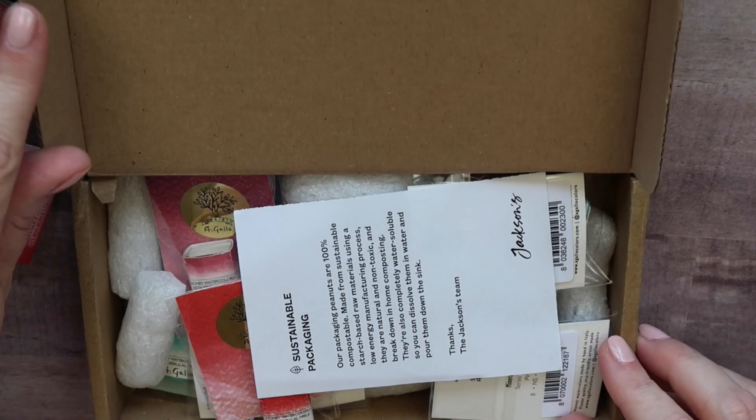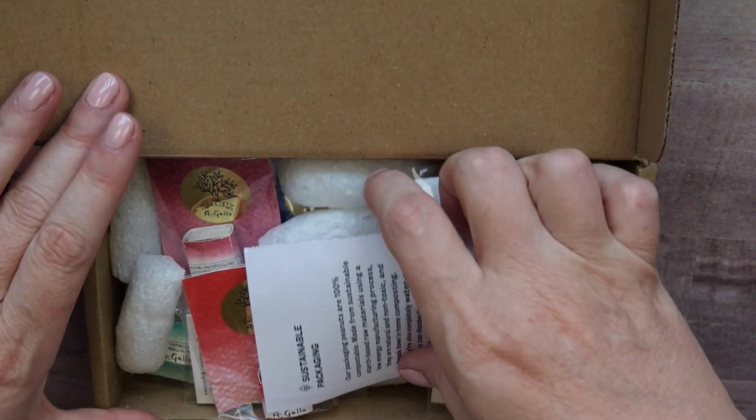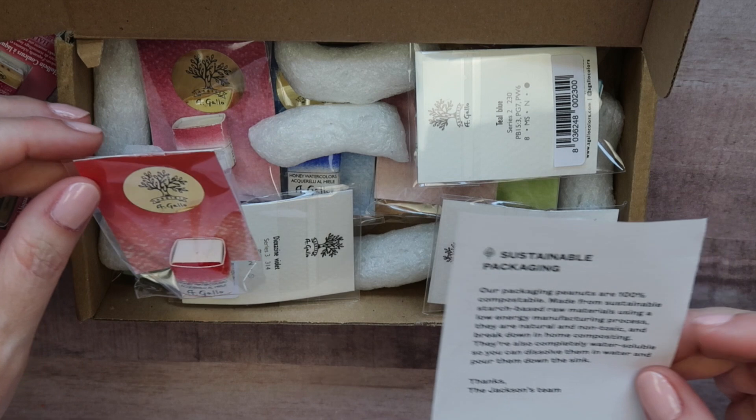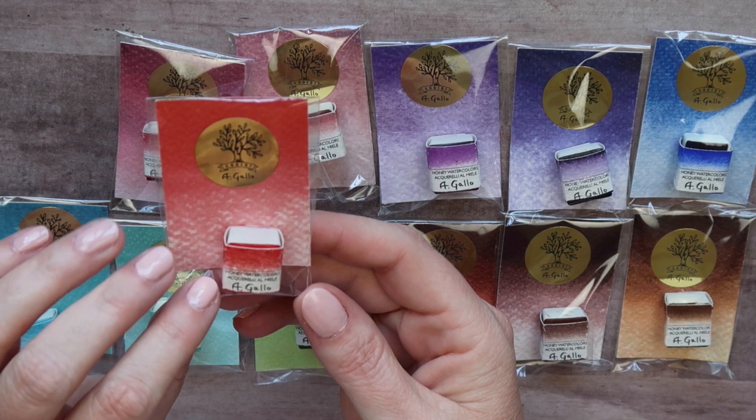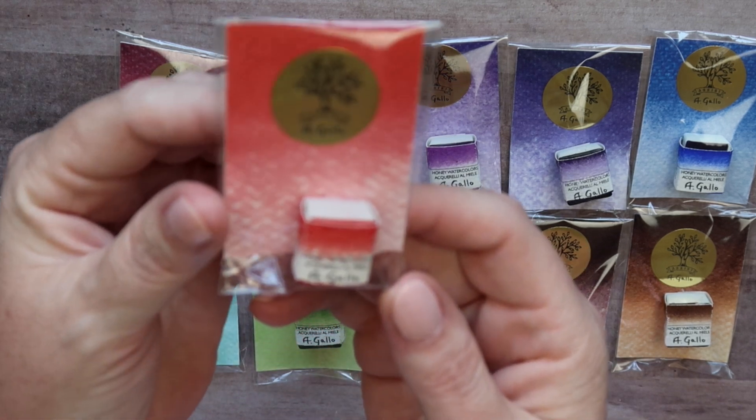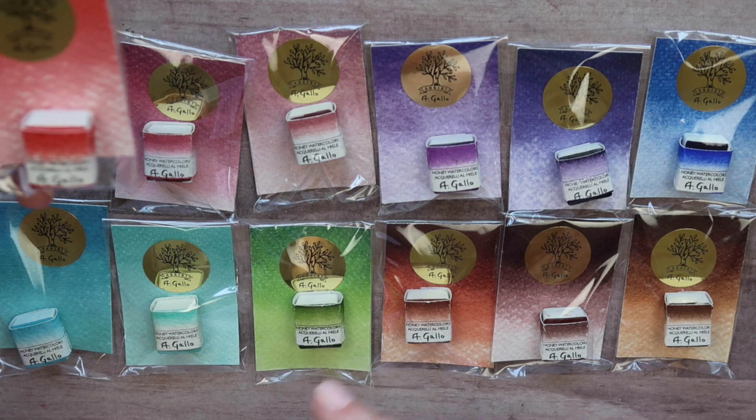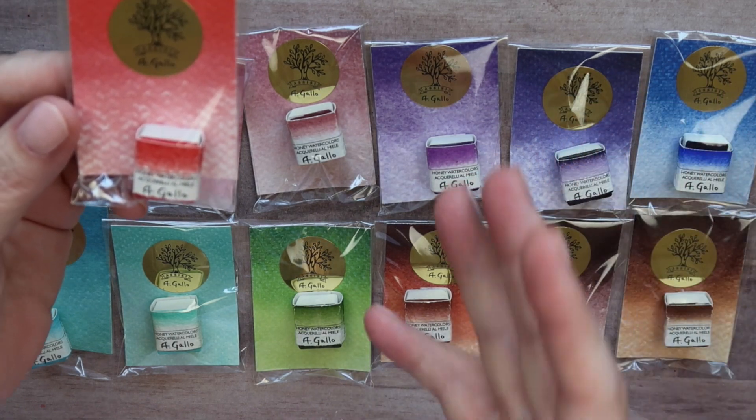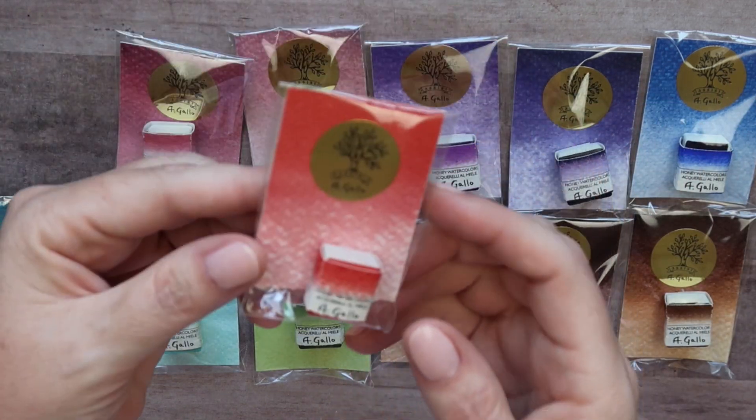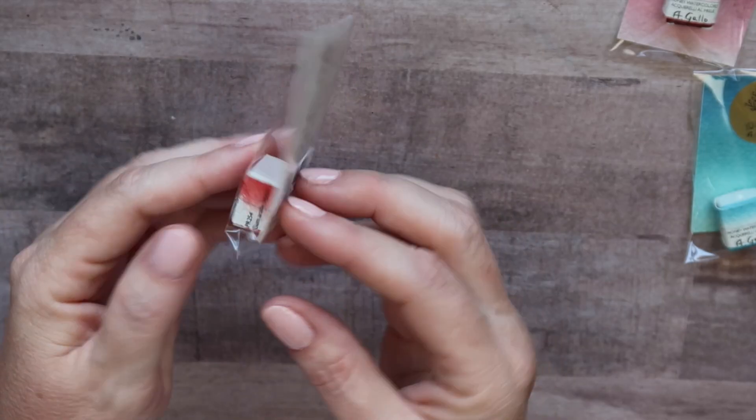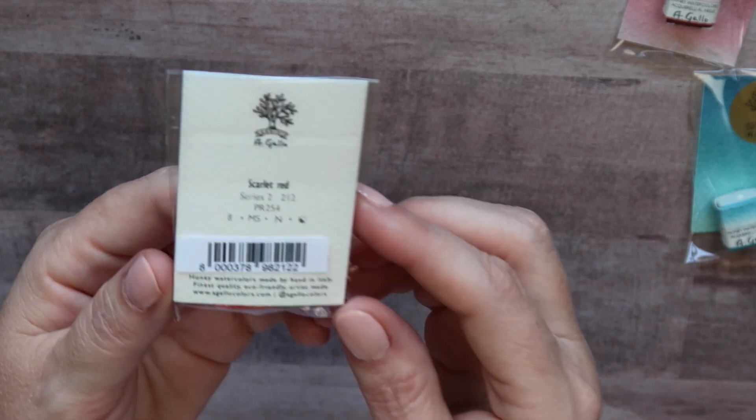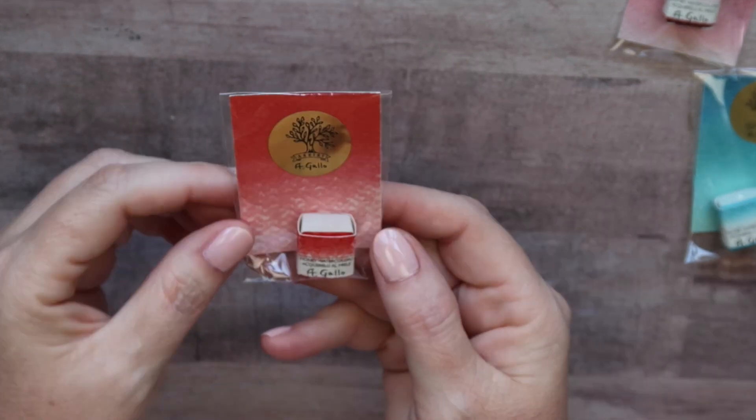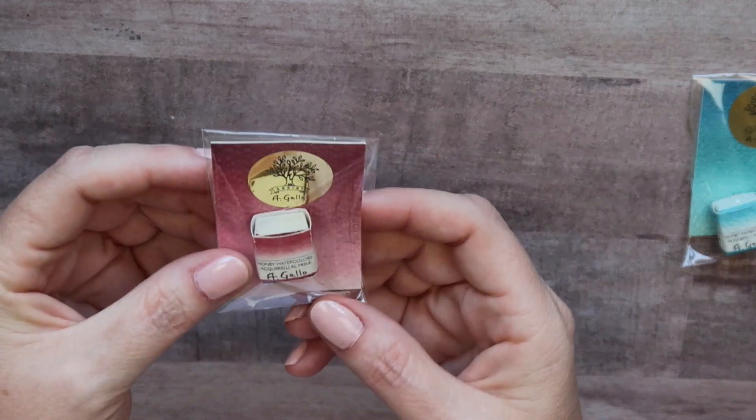So this first haul is from Jackson's and this is a box full of more of the watercolors from A. Gallo. So look at all of these gorgeous colors. I just love that they come in the packaging. They already have the color swatch so you guys can see right away if this is going to be a color for you. The first color that I chose is scarlet red, a nice warm red made from PR254. So that's scarlet red.